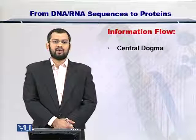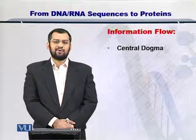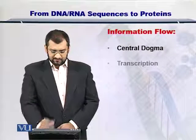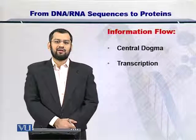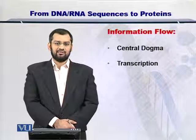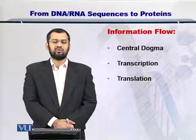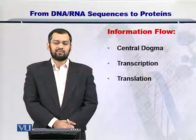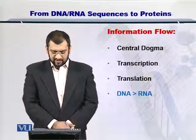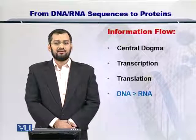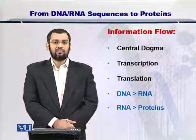The information flow as dictated by the central dogma is that the first step is called transcription. In transcription, the information is taken from the DNA and is put into the RNA. Next, translation happens — the information goes from the RNA into the proteins. Therefore, the information flow can be stated as the DNA setting information for the RNA and the RNAs encoding for the proteins.